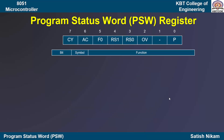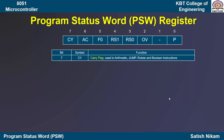Now we are going to discuss the bit names, their symbols, and the function of each bit. The MSB bit is the seventh bit, which is the carry flag denoted by CY. It is used in arithmetic operations, jump operations, rotate operations, and Boolean operations, which we will discuss in detail when we cover the instruction set. The carry flag indicates whether the previous operation resulted in a carry from the D7 bit.